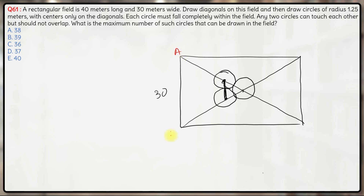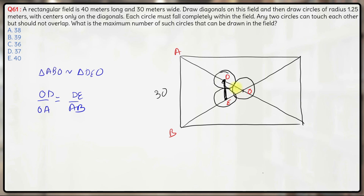Let us name the points: A, B, O (center), D, and E. Triangle ABO is similar to triangle DEO. Therefore, OD/OA = DE/AB. OD is 1.25 + 1.25 = 2.5, OA is half the diagonal = 25, and AB = 30. So DE = (2.5/25) × 30 = 3 meters. Since DE = 3 meters is greater than 2.5, the two circles do not overlap. If this distance was less than 2.5, the circles would overlap; since it is more than 2.5, they do not.